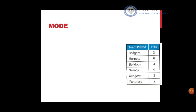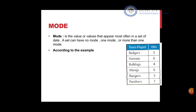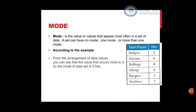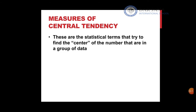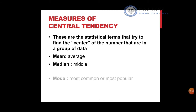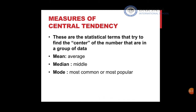Mode is the easiest of them all. Mode is the value that is most repeated — the value you can find most often in the data set. Looking at the table: 3, 6, 4, 0, 3, 7 — is any value repeated? Yes, it's three. So the mode in this case is three. These are the measures of central tendency: mean finds the average, median finds the middle number, mode finds the most common number.